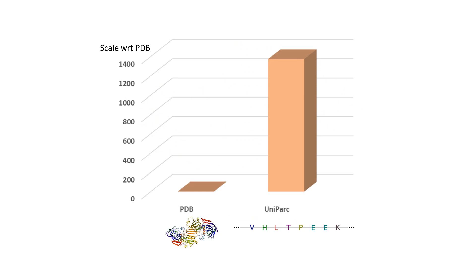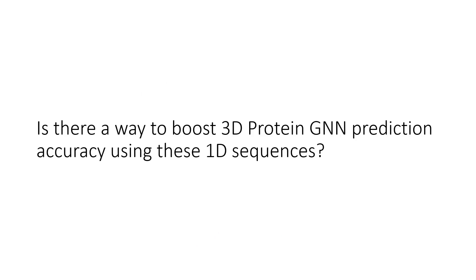However, the amount of 3D protein structures is usually much lower than the 1D linear protein sequence data. The availability of new protein sequence data continues to far outpace the availability of experimental protein structure data, only increasing the need for accurate protein modeling tools. So, is there a way to boost 3D protein graph neural network model prediction accuracy using these abundant 1D protein sequences?